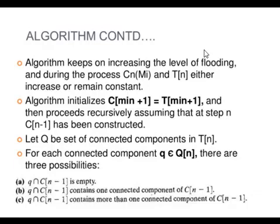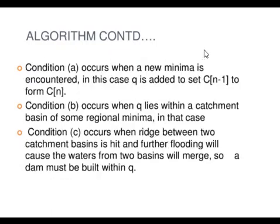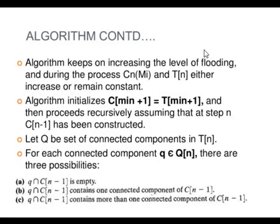According to the algorithm, the level of flooding increases. During the process, C(M1) and C(n), T(n) is either increasing or remaining constant. There are three possibilities for each connected component Q: either their intersection of Q and C dash of n minus 1 is either empty, or one connected component, or more than one connected component.